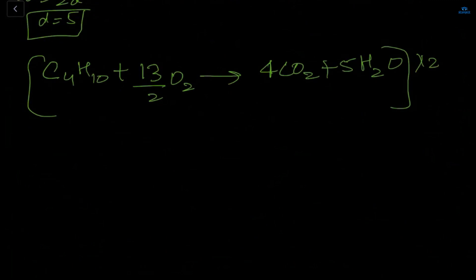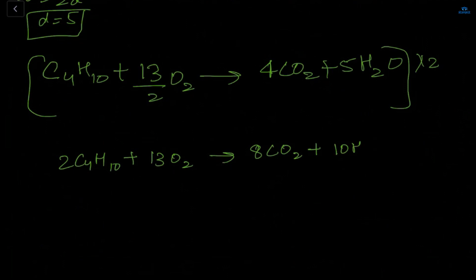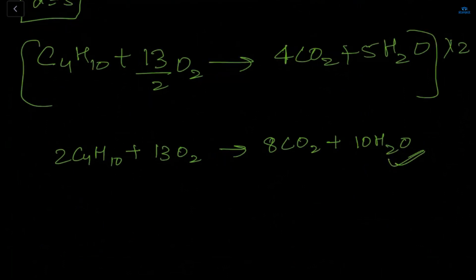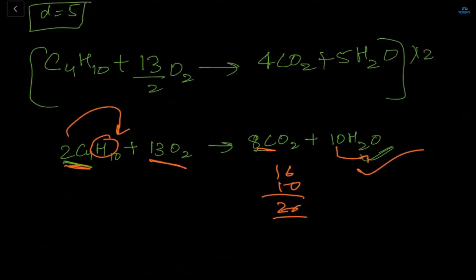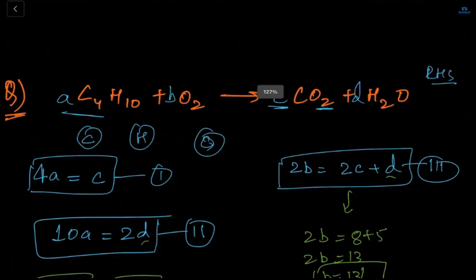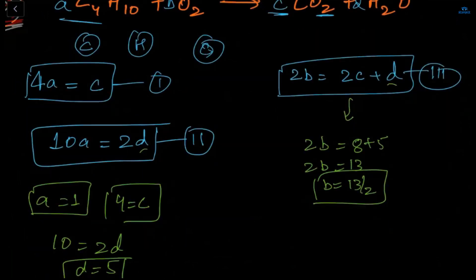Let me verify: C4H10 + 13 O2 → 8 CO2 + 10 H2O. Carbon: 8 on both sides. Hydrogen: 20 on both sides. Oxygen: 13×2 = 26 on the left; 16 + 10 = 26 on the right. The chemical equation is balanced. This was hard without the trick — you just have to write a, b, c, d.